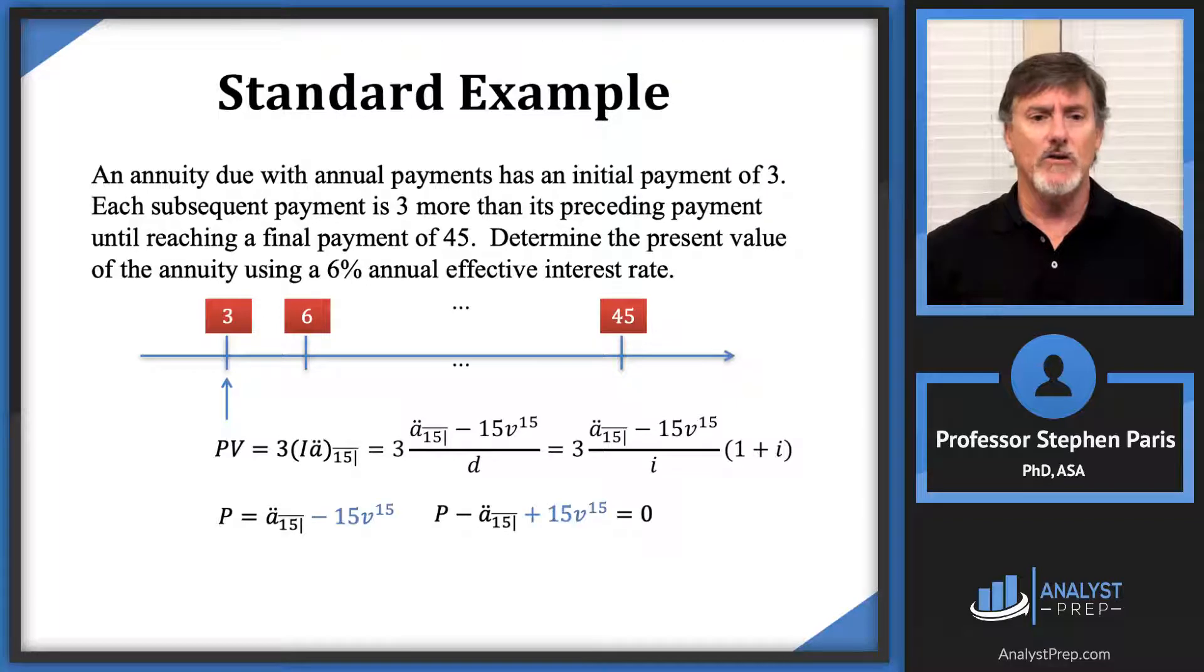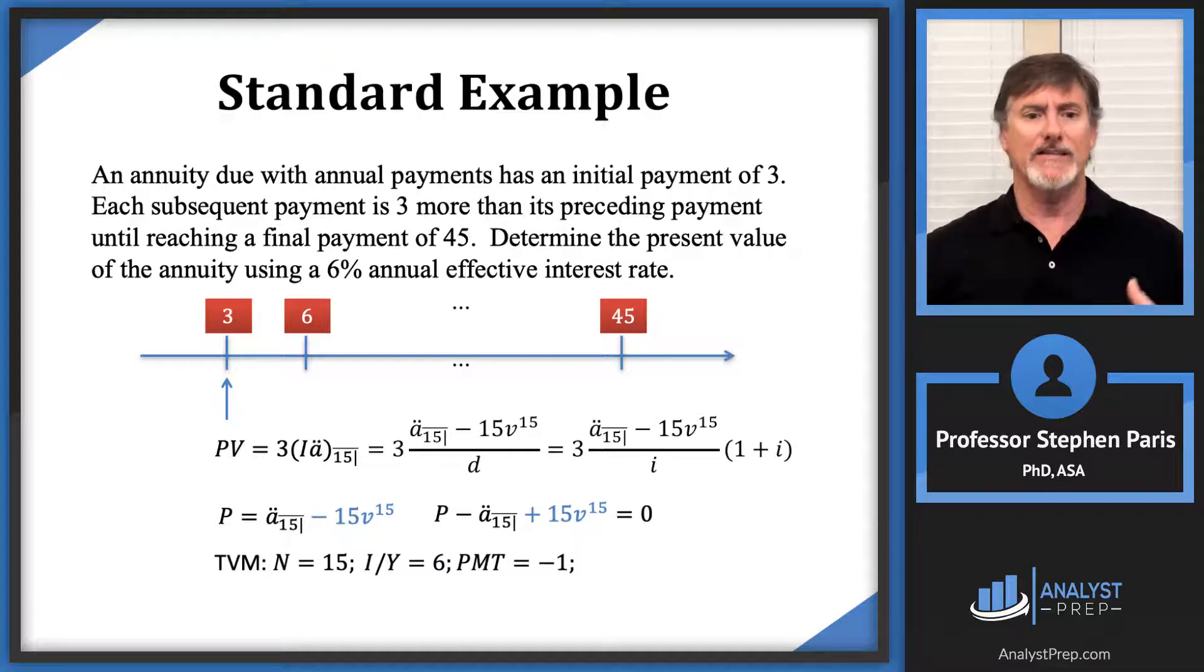For the moment, let's just ignore the minus 15 v to the 15th on that first expression. Ignore that for the moment, and if you were just calculating a numeric value for a double dot angle 15 using the TVM buttons, you would type in 15 for n and 6 for i slash y. The annual effective interest rate is 6%, and I put in the negative payment of 1 because in standard form there's an understood minus 1 times the a double dot angle 15.